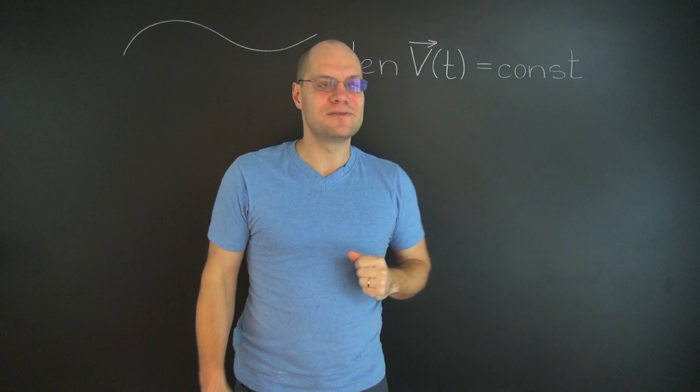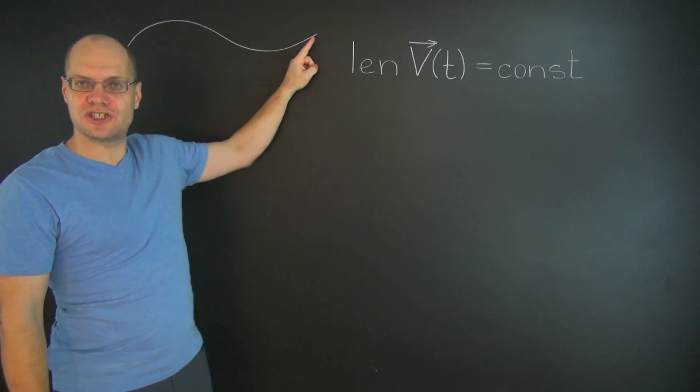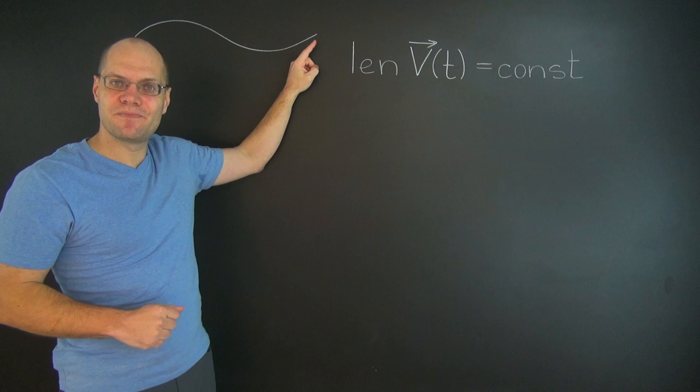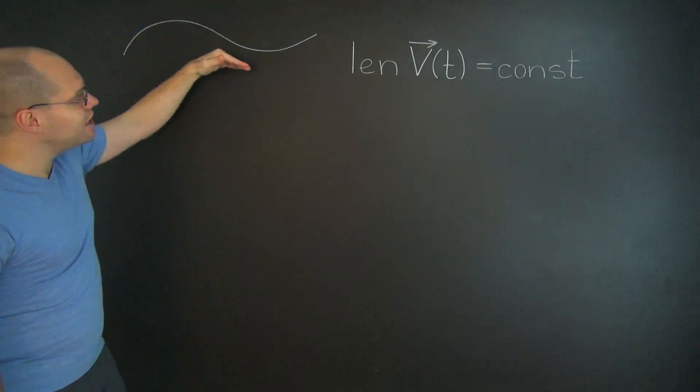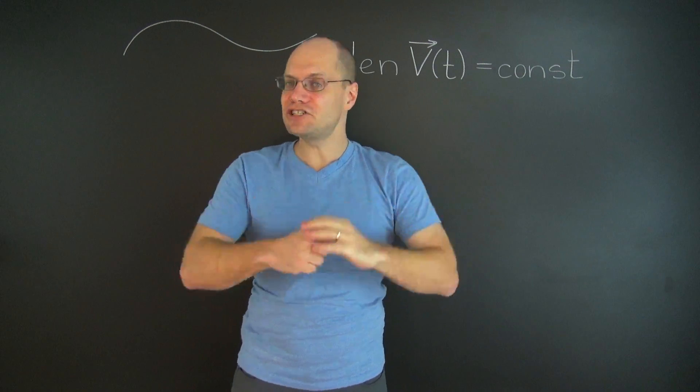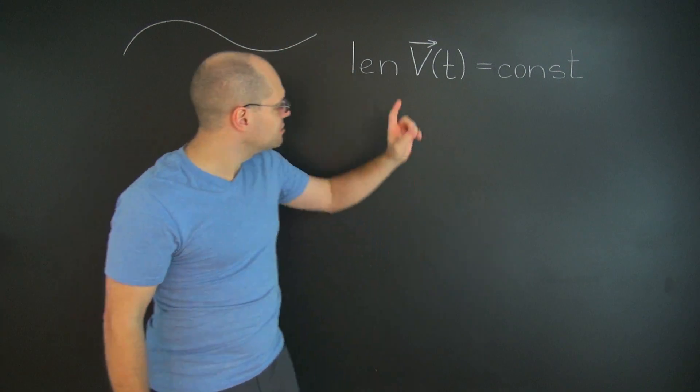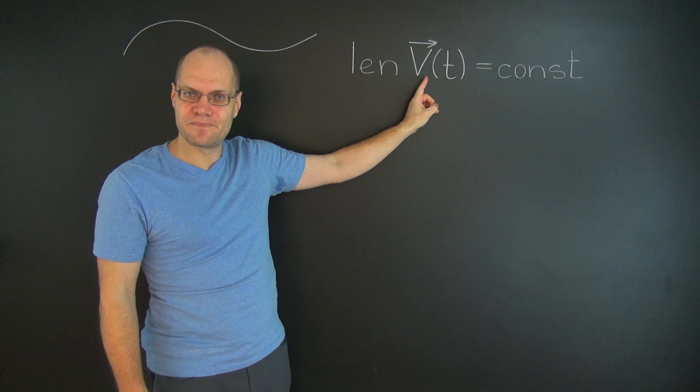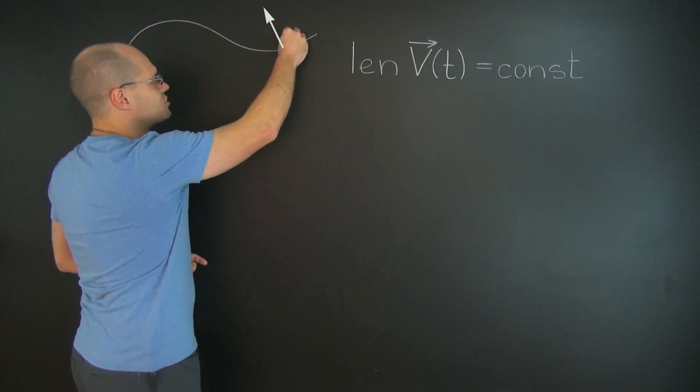In other words, if you think of a particle moving along a trajectory with constant speed, but obviously a varying velocity because the trajectory is not straight, then the acceleration of the particle—in other words the derivative of its velocity—is orthogonal to the trajectory itself.